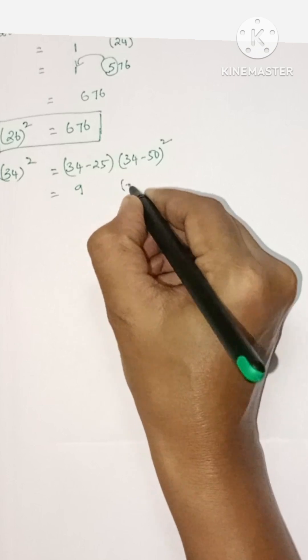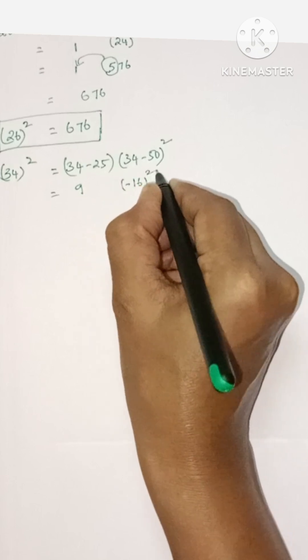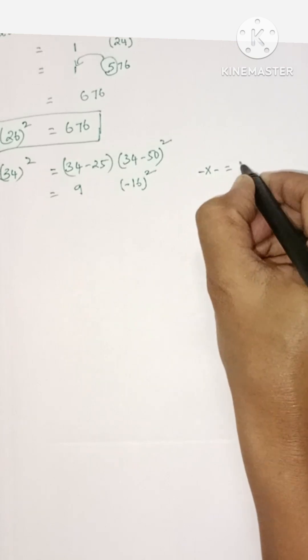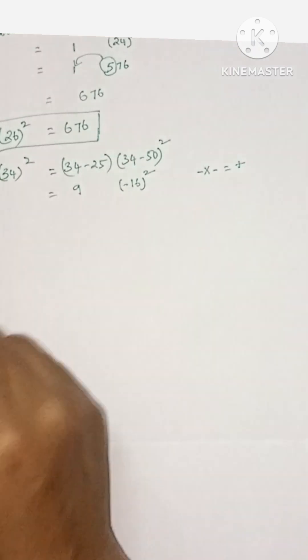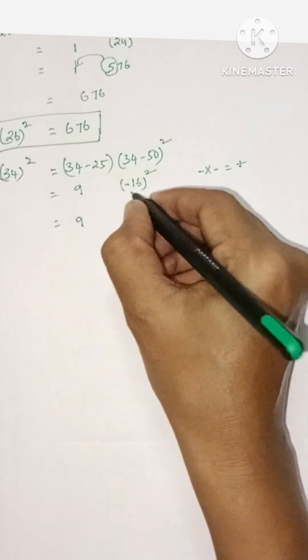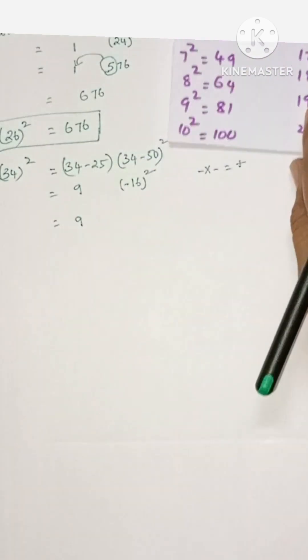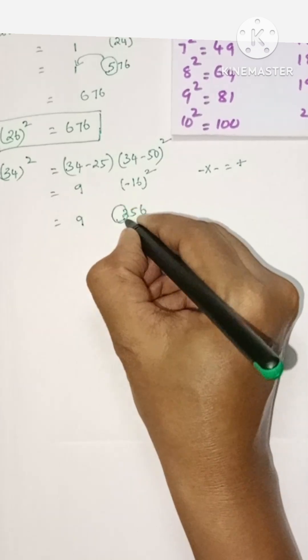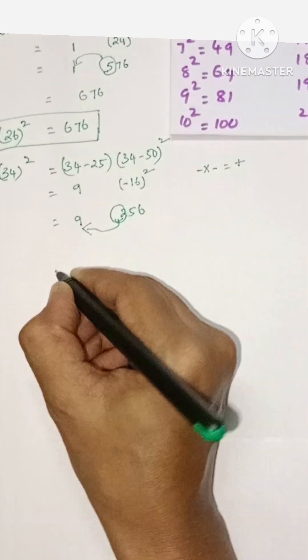The answer is minus 16. If we square this, minus into minus will be plus, right? So it's 9 and 16 square. Again here, 16 square is 256, so just add this third digit to part 1.